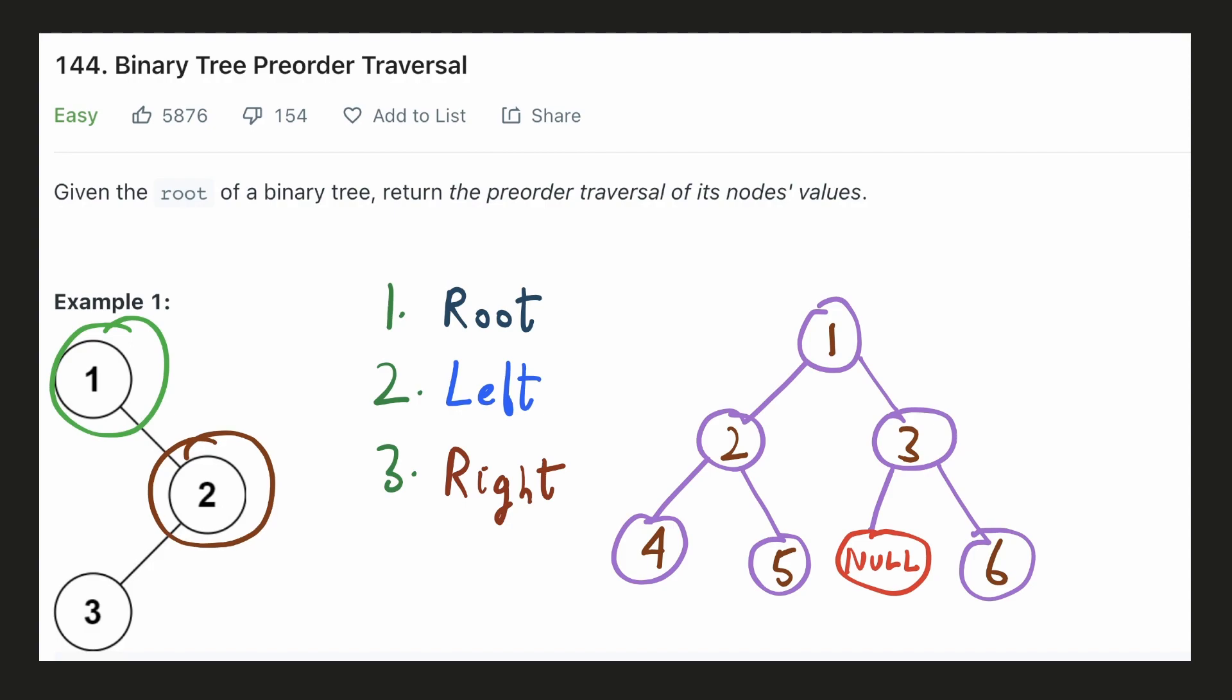So this element will now become our new root, we'll print its value and then try to repeat the same process if there is a left subtree. So this will become our new root and then we'll print its value. This node has no child element, so we'll go back to the parent.